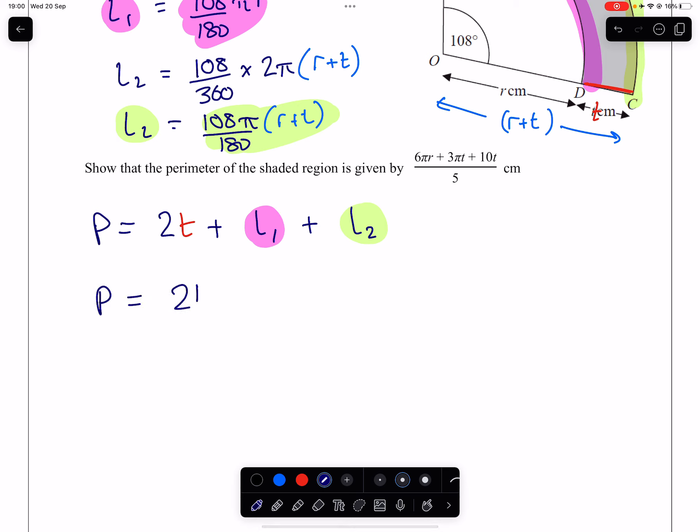So subbing in these for L1 and L2 is going to give us the following. We have a 2T. We have a 108 over 180 πR. And we have a 108 over 180 π bracket R plus T. Before I break out that bracket, looking at what we're being asked to show, I notice that it's a single fraction. So I'm going to want to write this over 180 and mix all of these together as fractions first before I start breaking it out.